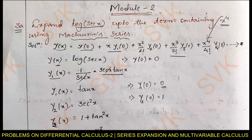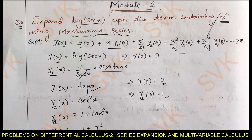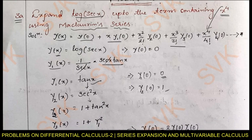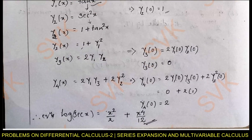Now, finding y₂: differentiate y₁ with respect to x to get the derivative of tan x, which is sec²x. Putting x = 0, y₂(0) = sec²(0) = 1. For further differentiation of higher-order derivatives, I simplify sec²x as 1 + tan²x. Since tan x is defined as y₁, I substitute: y₂(x) = 1 + y₁².